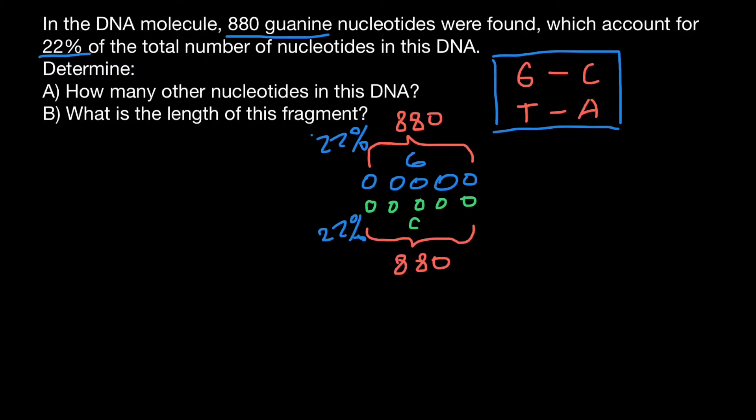Now, if we know that these two bases account for 44%, we instantly know that other two bases, which is thymine and adenine, would account for the rest. And what is the rest? The rest is going to be 100% minus 44% would give us 56%. So the rest, two bases, thymine and adenine would make 56%.